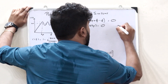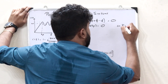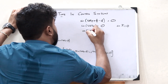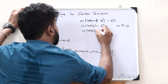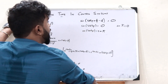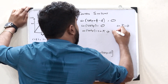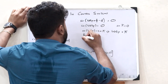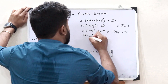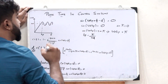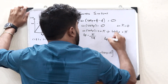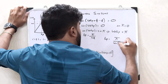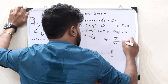We know that sin(n*pi) = 0. So sin(omega_d t_p) = 0 implies omega_d t_p = pi, therefore t_p = pi divided by omega_d. Thus, t_p = pi divided by omega_n times root of 1 minus zeta squared.